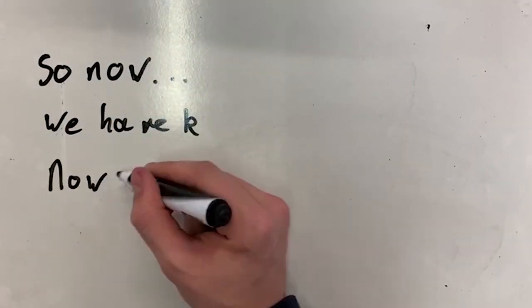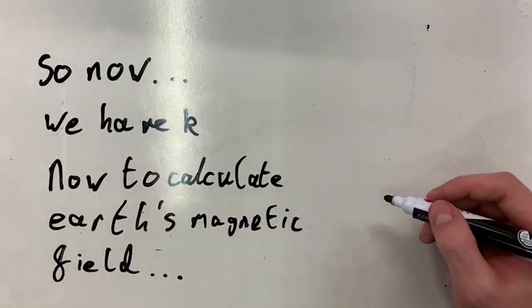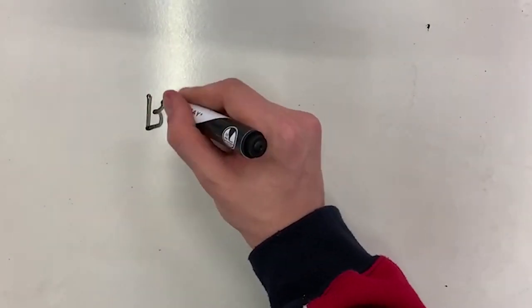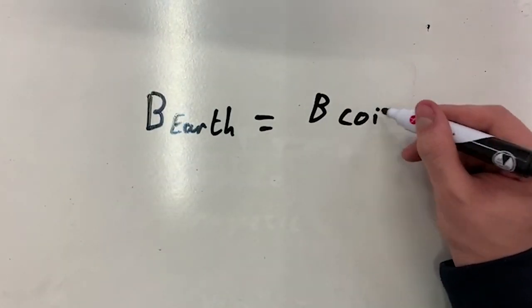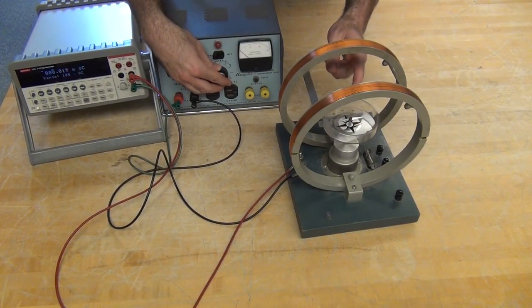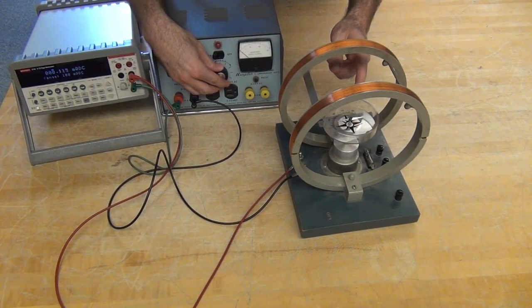So now we have k. Now to calculate Earth's magnetic field: the magnetic field of Earth is equal to the magnetic field in the coils over tan(theta), where theta is the amount the compass is rotated by the coils' magnetic field.